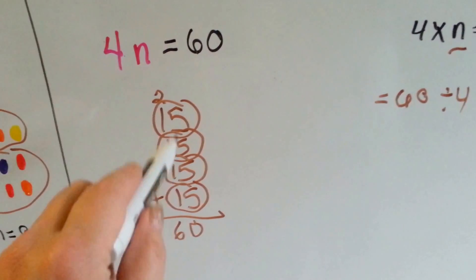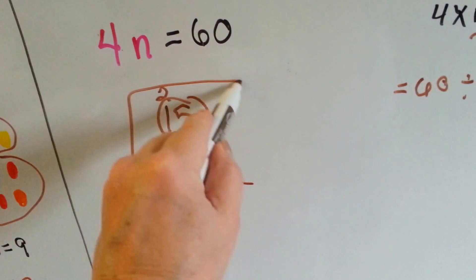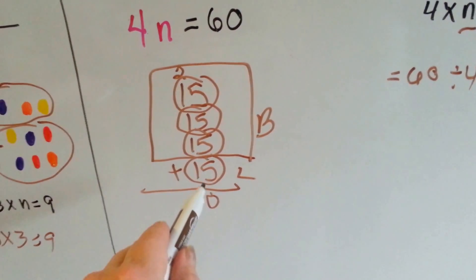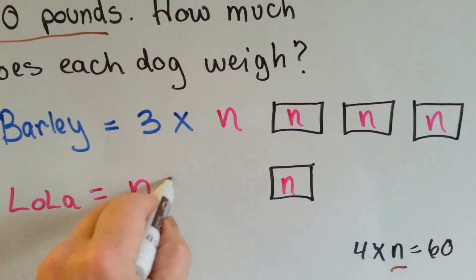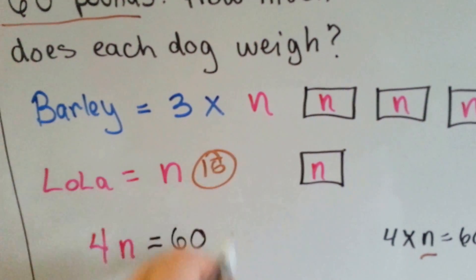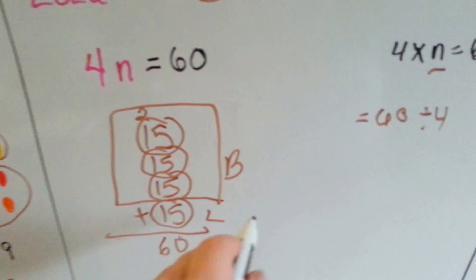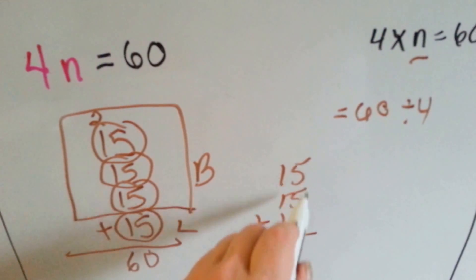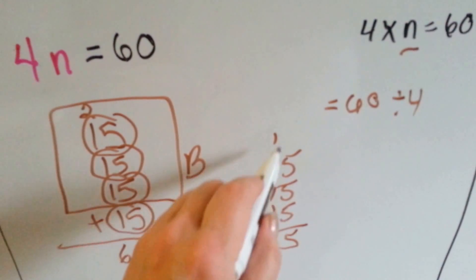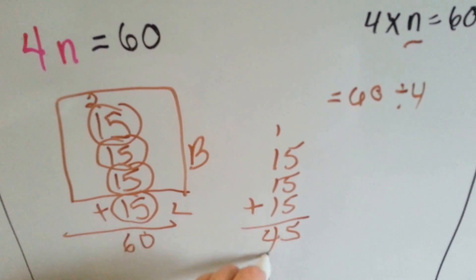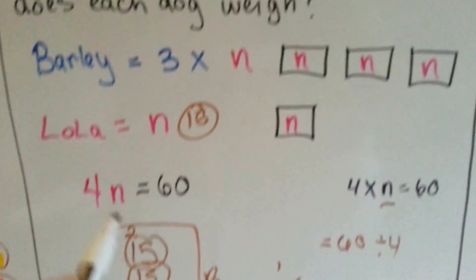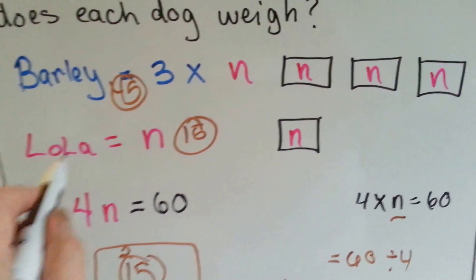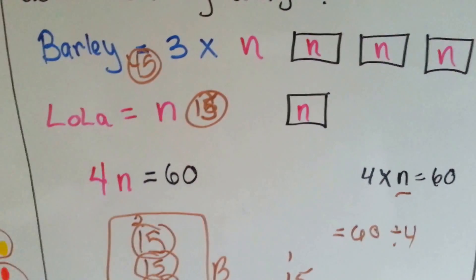So, if Barley is three of them, and Lola is one of them, that means Lola weighs 15 pounds. That means Lola is 15 pounds. And that means Barley is what? What's 15 three times? Five, ten, fifteen, carry the one, put the five down. One, two, three, four, forty-five pounds. So, Barley is forty-five pounds. And Lola is only fifteen pounds. Do you see how I did that?